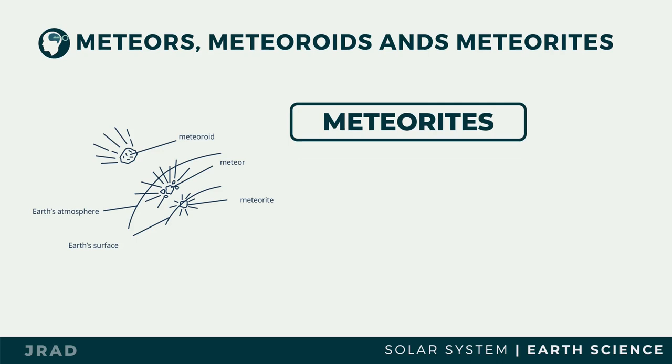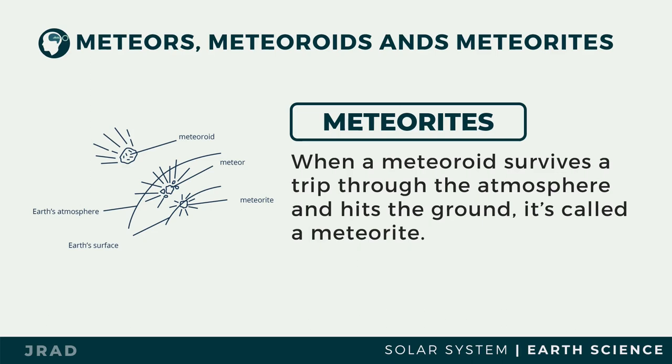Once a meteor survives its course in the atmosphere and hits the ground, it is termed a meteorite. Meteorites are used by scientists to determine the composition of meteoroids, which are thought to be made up of rocky materials, iron, and nickel.